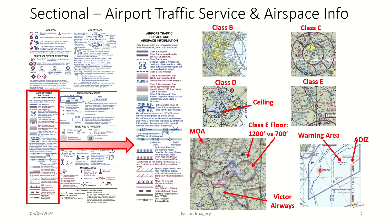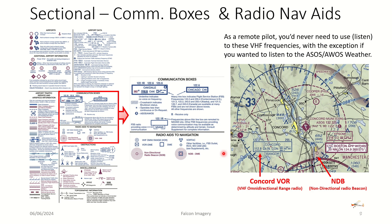Off the northeast coast, you have warning areas and ADIZ areas — we'll get into those in a minute. There are also magenta hash lines representing military operating areas. We'll spend a bit more time on those on a later slide.